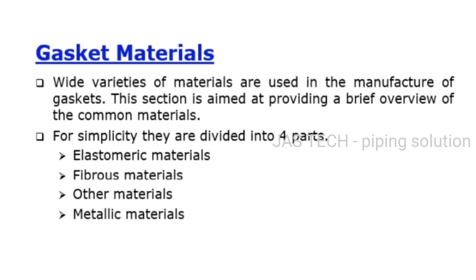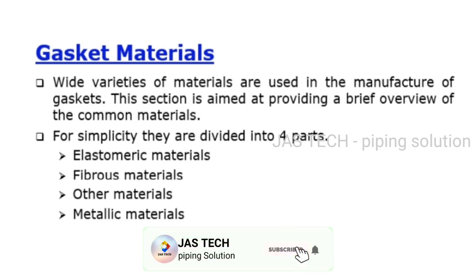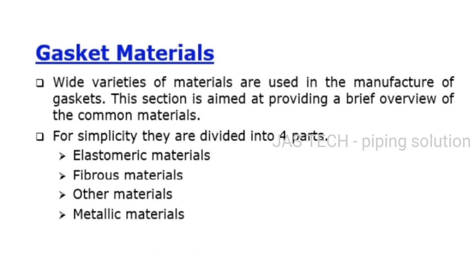Gasket materials: Why are varieties of materials used in the manufacture of gaskets? This section provides a brief overview of common materials. For simplicity, they are divided into four parts: elastomeric materials, fibrous materials, other materials, and metallic materials.